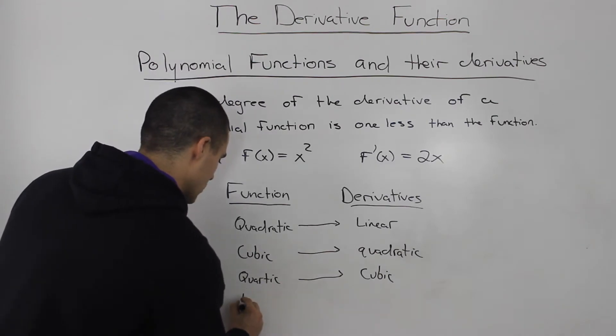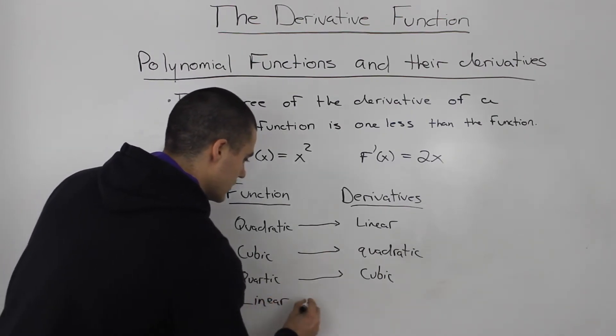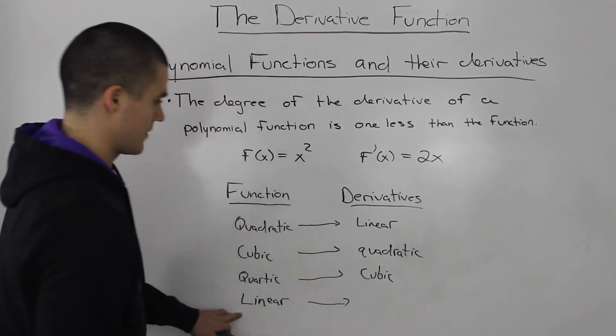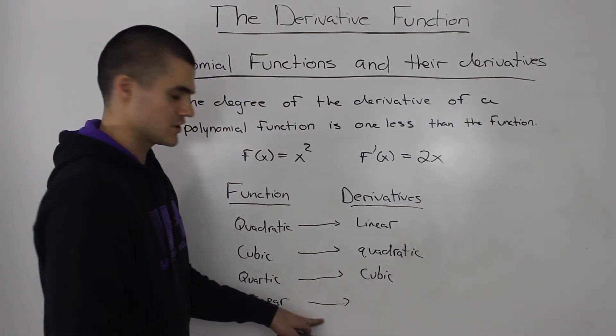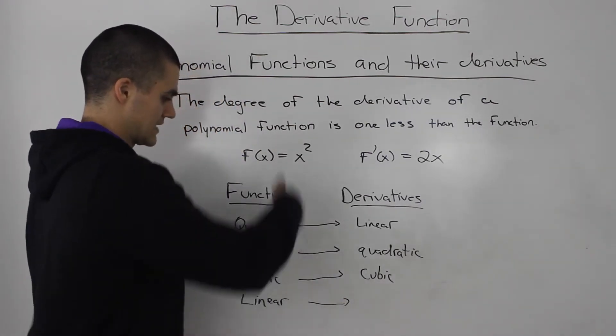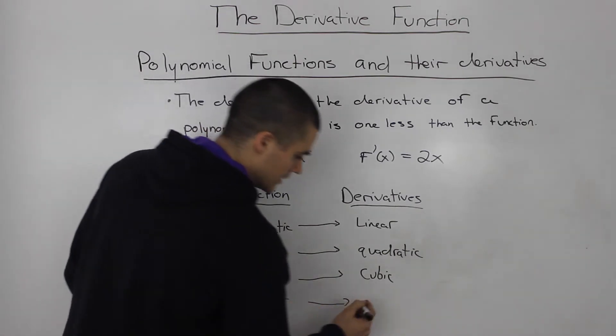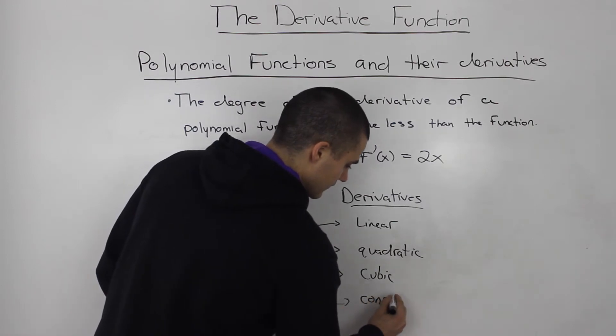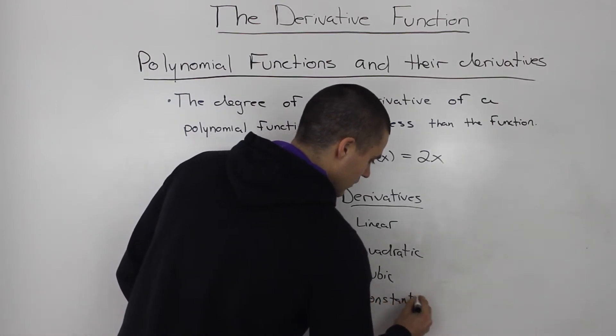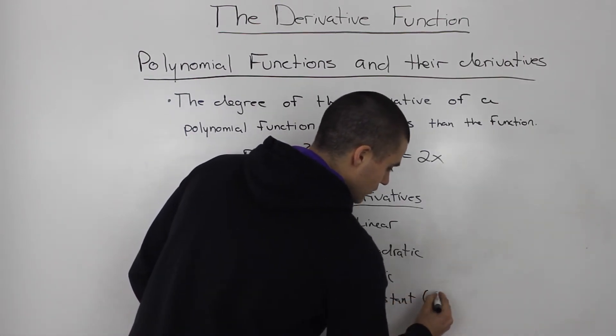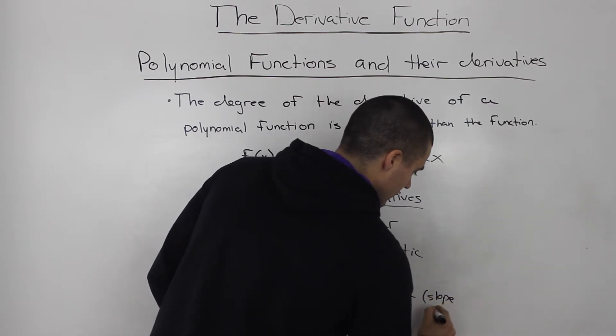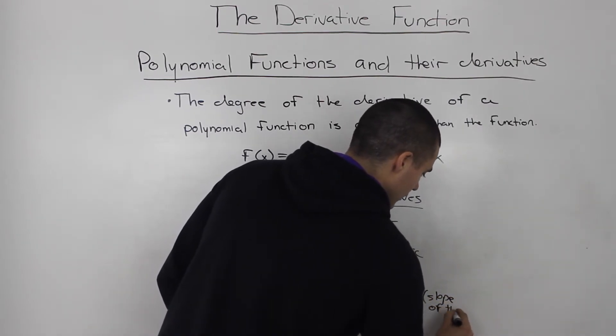Another one is here: linear. The derivative of a linear function, unless it's a vertical line, any other line will always be a constant, and that constant will always equal the slope of the line.